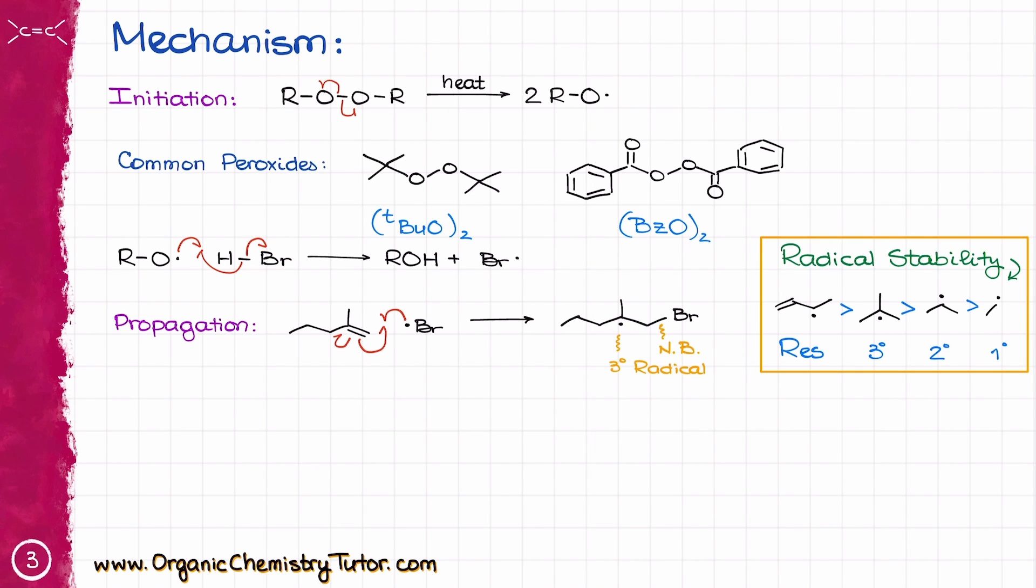These reactions will always give you the most stable radical, and when it comes to radical stability, they follow the same trend as carbocations. The resonance stabilization beats the tertiary radical, which is more stable than the secondary radical, and which in turn is going to be more stable than the primary radical. And unlike primary carbocations,